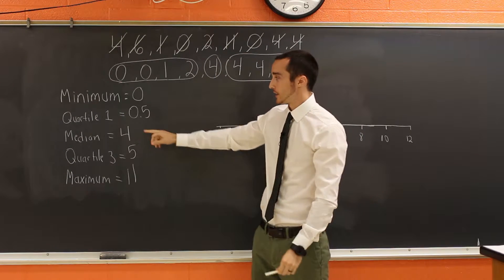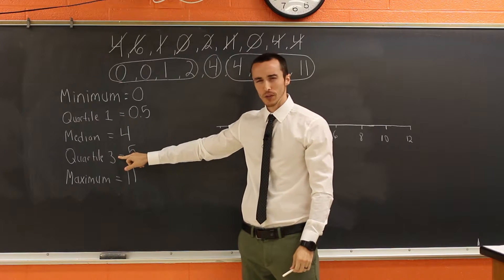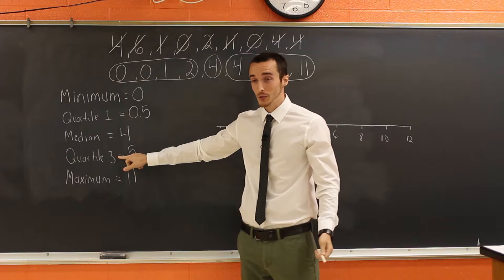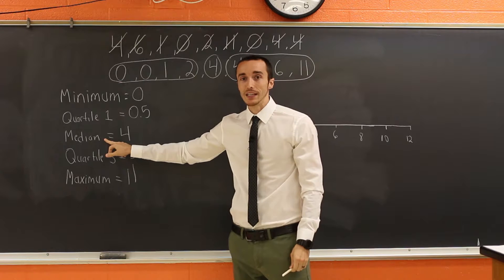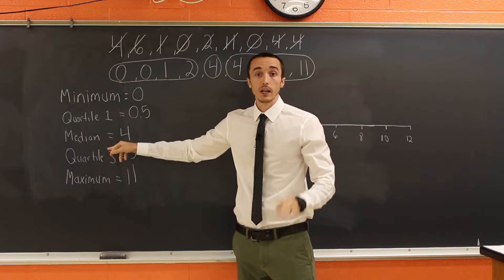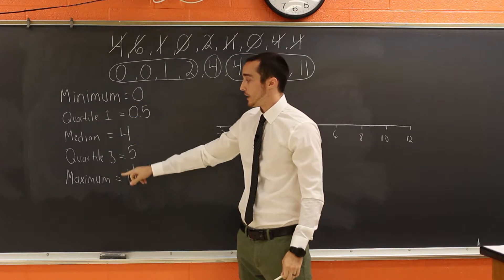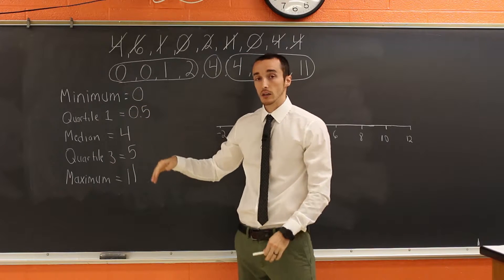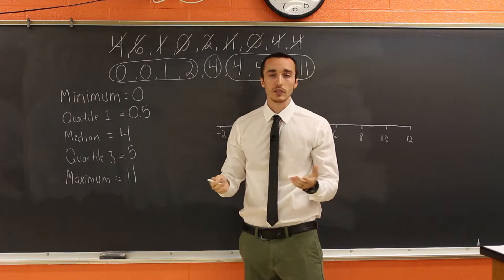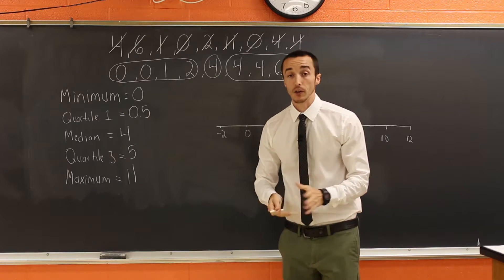Now, if you're looking at this and you see quartile one and quartile three and you're wondering what happened to quartile two. Well, sometimes the median is referred to as quartile two. Similarly, the minimum and the maximum sometimes are called the lower extreme and the upper extreme. It's different ways to say the same thing.